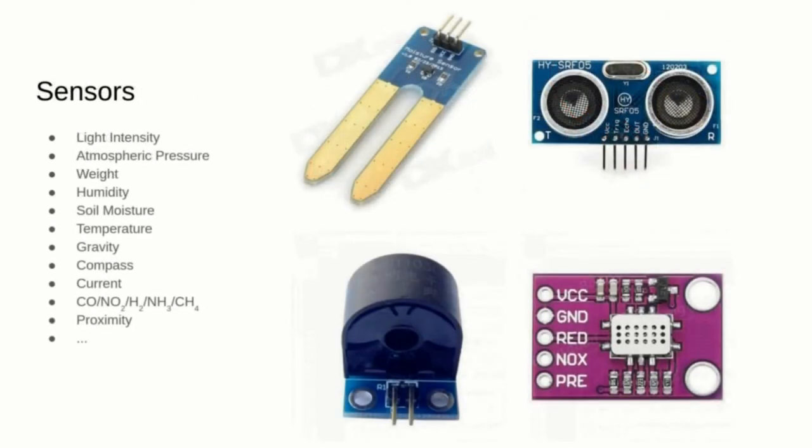Sensors are some of the most interesting components to read, and most of them require a single analog pin. There are sensors for almost anything, like light intensity, atmospheric pressure, weight, humidity, soil moisture, temperature, gravity, compass, current, air pollution chemicals, proximity, and many more.